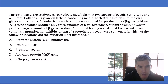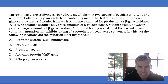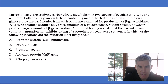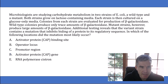Mutant strains, however, produce large amounts of beta-galactosidase. Additional testing reveals that the variant strain contains a mutation that inhibits binding of a protein to its regulatory sequence. In which of the following locations did the mutation most likely occur? The answer choices are: activated protein cap binding site, operator locus, promoter region, activated protein cap gene, and RNA polymerase cistron.